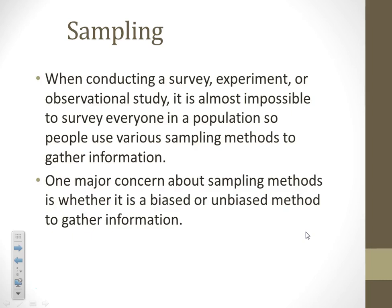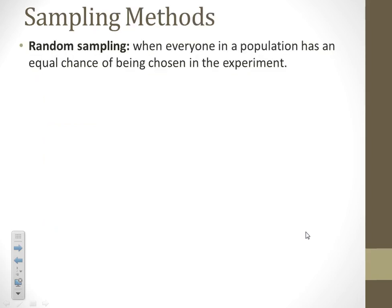We have to consider whether that sample is biased or unbiased — whether it was truly a random sample or not — and that has to be taken into consideration. Random sampling means that everybody in a population has an equal chance of being chosen in the experiment.